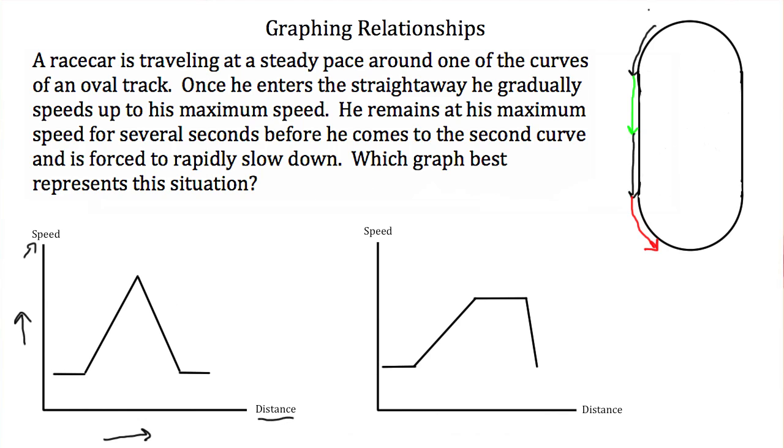So in the first segment of this race car's path, he's traveling at a constant speed around the course. So his distance around the track is increasing, but his speed is staying the same. Therefore you end up with a horizontal line or a horizontal segment that starts this graph.